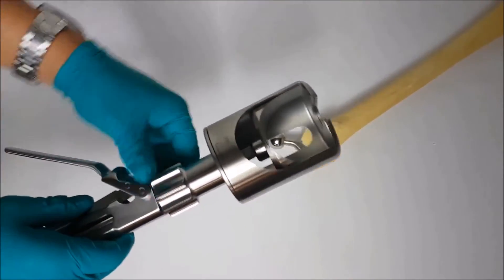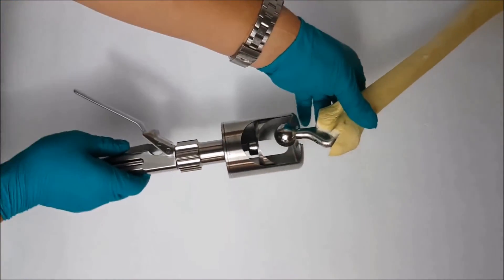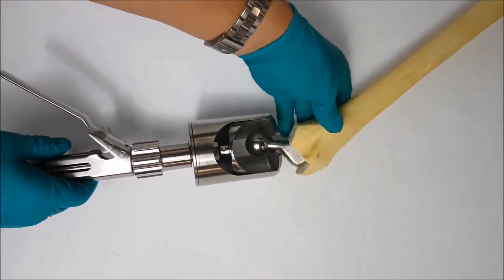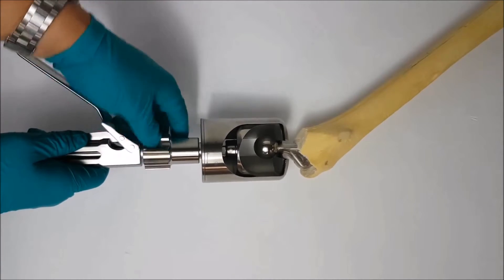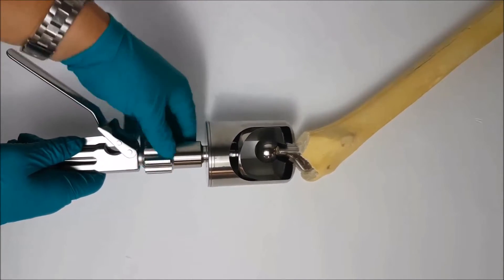Place the instrument over the femoral head as such. Turn the adjustment knob to the left, separating the ball retainer sleeve from the head disassembly cap.